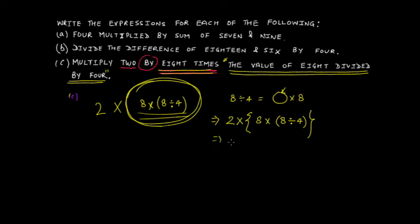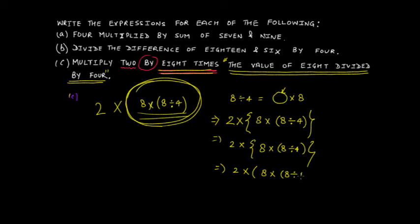You can write it as 2 × {8 × (8 ÷ 4)}, using curly brackets for the outer grouping and round brackets for the inner one, or you can use two levels of round brackets: 2 × (8 × (8 ÷ 4)). Both expressions are equal. I hope the concept of using brackets is now much clearer. In the next videos we will solve more problems related to brackets and mathematical expressions.